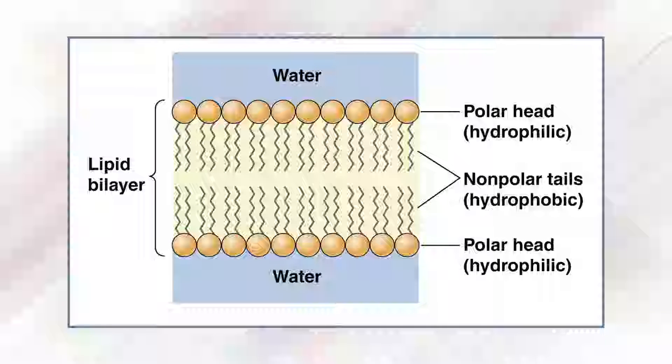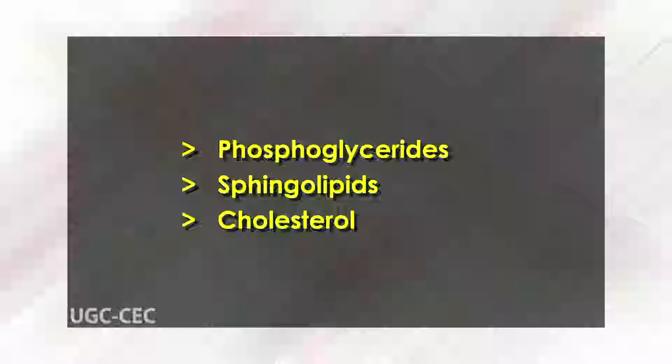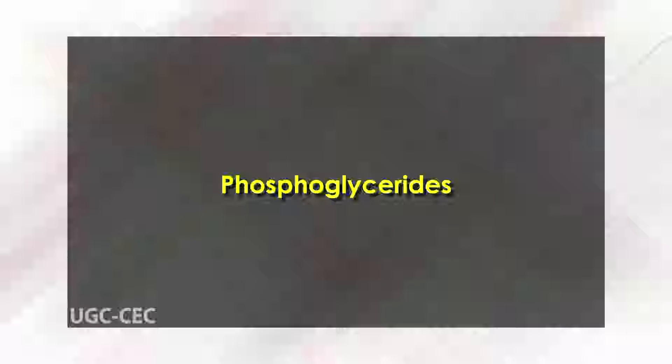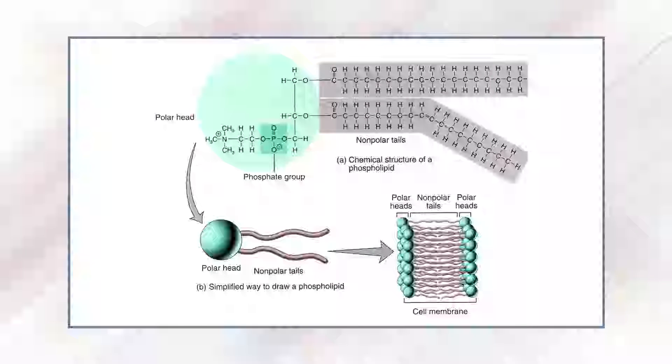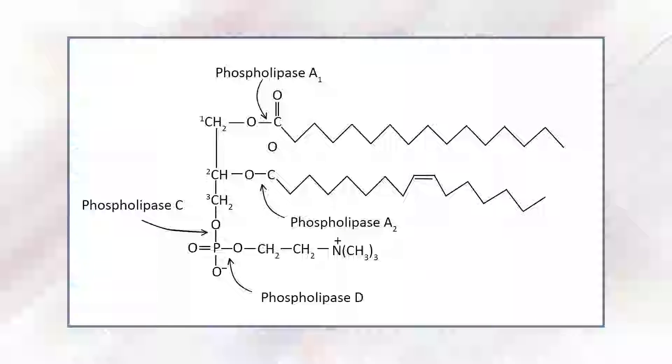Membranes contain a wide diversity of lipids, all of which are amphipathic — they contain both hydrophilic and hydrophobic regions. There are three main types of membrane lipids: phosphoglycerides, sphingolipids, and cholesterol. Most membrane lipids contain a phosphate group, making them phospholipids; because most are built on a glycerol backbone, they are called phosphoglycerides.